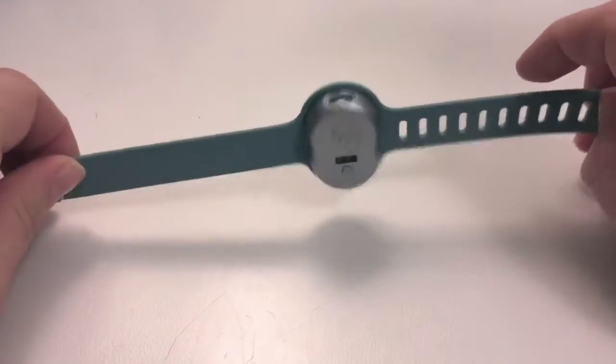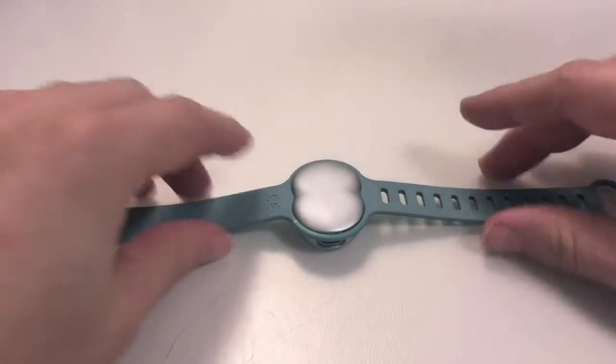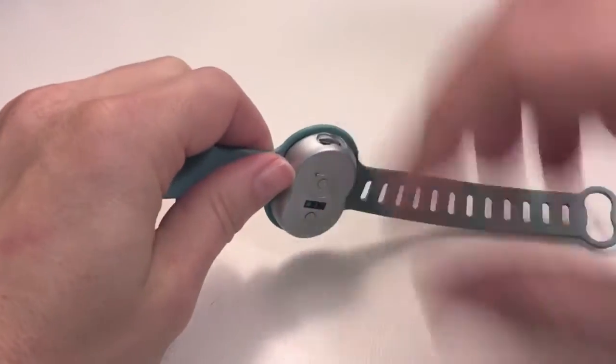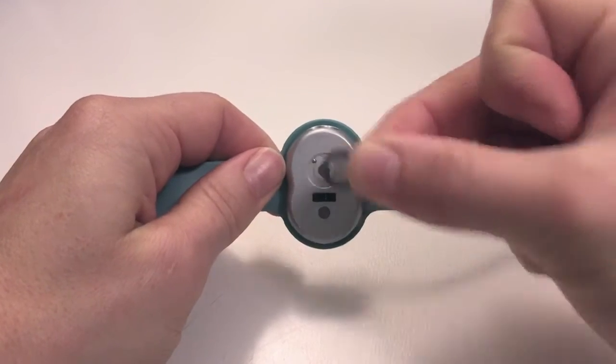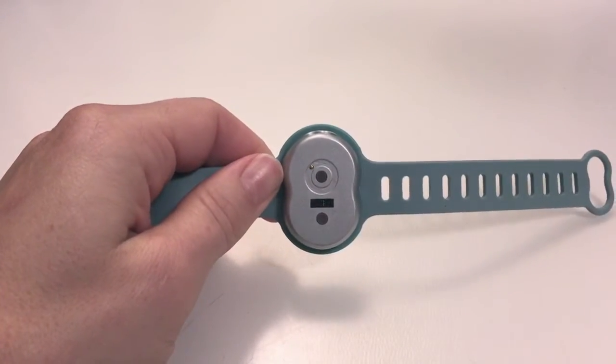All right, so this is the Ava bracelet. This is my broken one, as you can see. This little washer used to be on there, and it fell off.